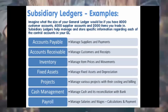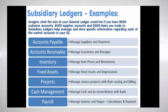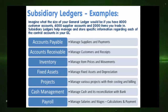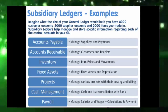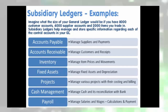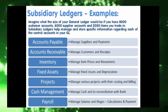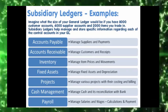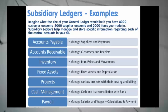Example of Subsidiary Ledgers: if a company does not maintain sub-ledgers and keeps all the information in the General Ledger, imagine the size of your General Ledger if you have 8,000 customer accounts, 4,000 supplier accounts, and 2,000 items you trade in — on average entering into 5,000 different transactions with suppliers and customers spread across the globe. Subsidiary ledgers help manage and store specific information regarding each of the control accounts in your GL. You can keep all the details in your sub-ledgers and post the summation for each account in the control account maintained at the General Ledger.